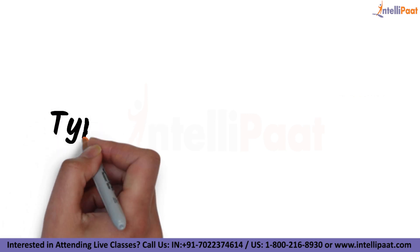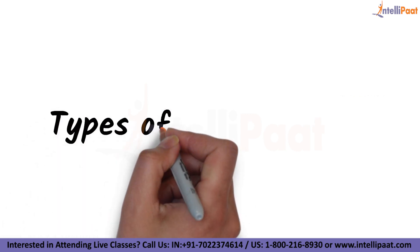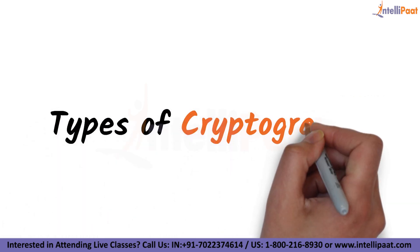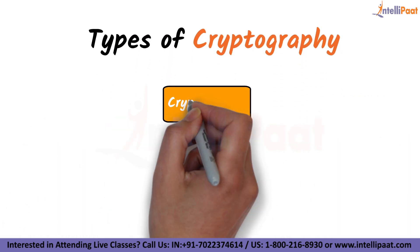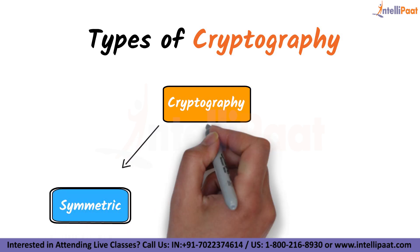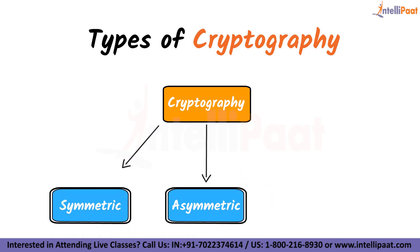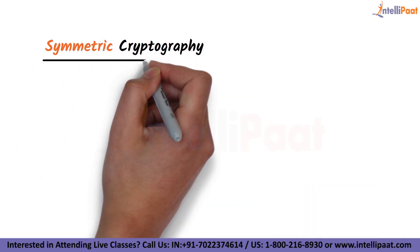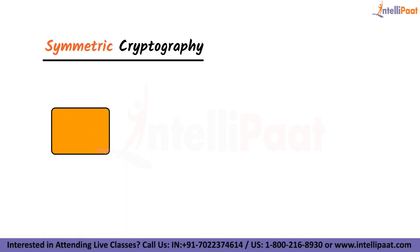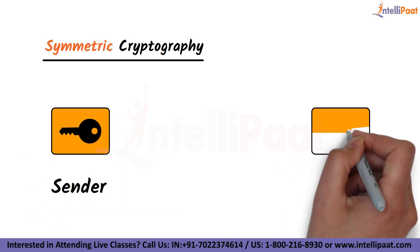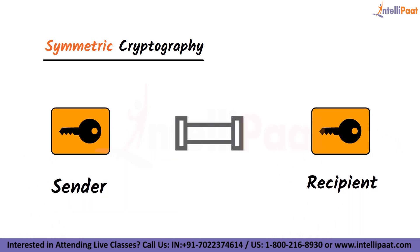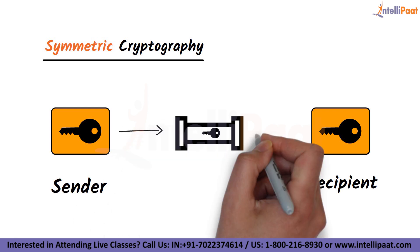Let's see the different types of cryptography and the differences between them. We have three different types: symmetric, asymmetric, and the one using hash functions. In symmetric cryptography, the same key is used for encryption and decryption. Both the sender and the recipient must have access to the same common key.